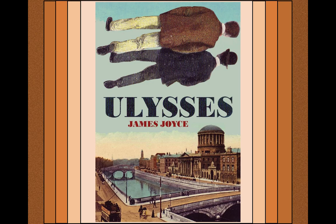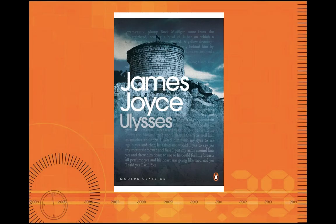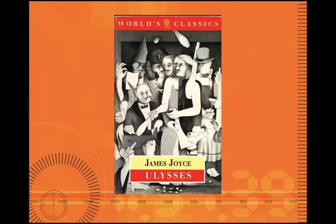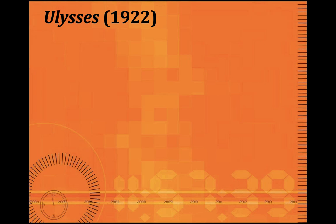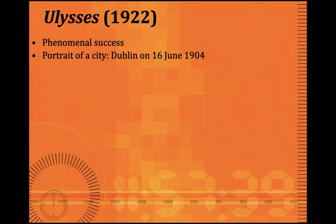Hello guys. Next we'll talk about James Joyce's Ulysses. This is the second part of the video series on James Joyce. You're looking at some book covers of James Joyce's Ulysses. This is the Martello Tower where the novel begins, and you see the Dubliners in Ulysses. Ulysses is a novel published in 1922. Before that it was serially published, and it has been hailed as the most important novel of the 20th century. It shows the city of Dublin on one day: 16 June 1904.